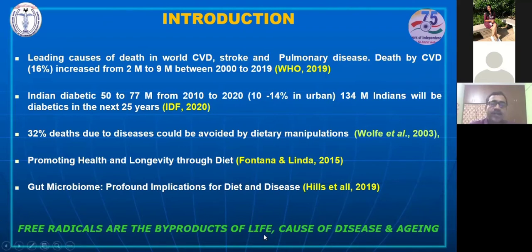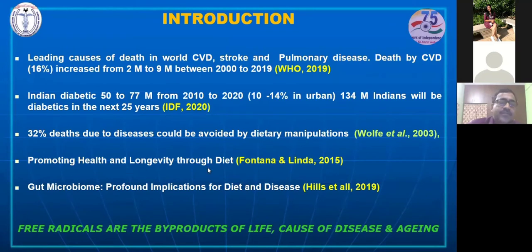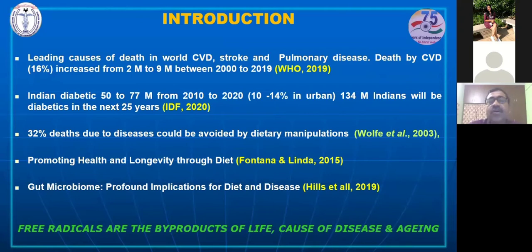An important message at the bottom: these metabolic or lifestyle diseases are due to lifestyle, diet, and stress, but one important factor is free radicals. Life is run by energy, and that energy is produced by oxidation. So as long as there is life, free radicals are unavoidable — they are byproducts of life. Free radicals are a cause of many diseases and aging. If we properly manage free radicals through antioxidants — both inside the body and in food — then a lot of damage and disease can be avoided. That is the focus of this talk.